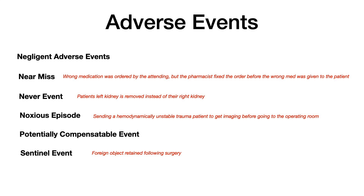A noxious episode is where there's a potential complication of a treatment, but you still opt for that treatment. For example, a trauma patient comes into the emergency room hemodynamically unstable, and you make the decision to send them to get imaging before taking them to the operating room. In sending them to get imaging, they could bleed out or die, but in your decision making you determine they need imaging first. This is a noxious episode — there's a potential adverse event, but you opt to proceed anyway.